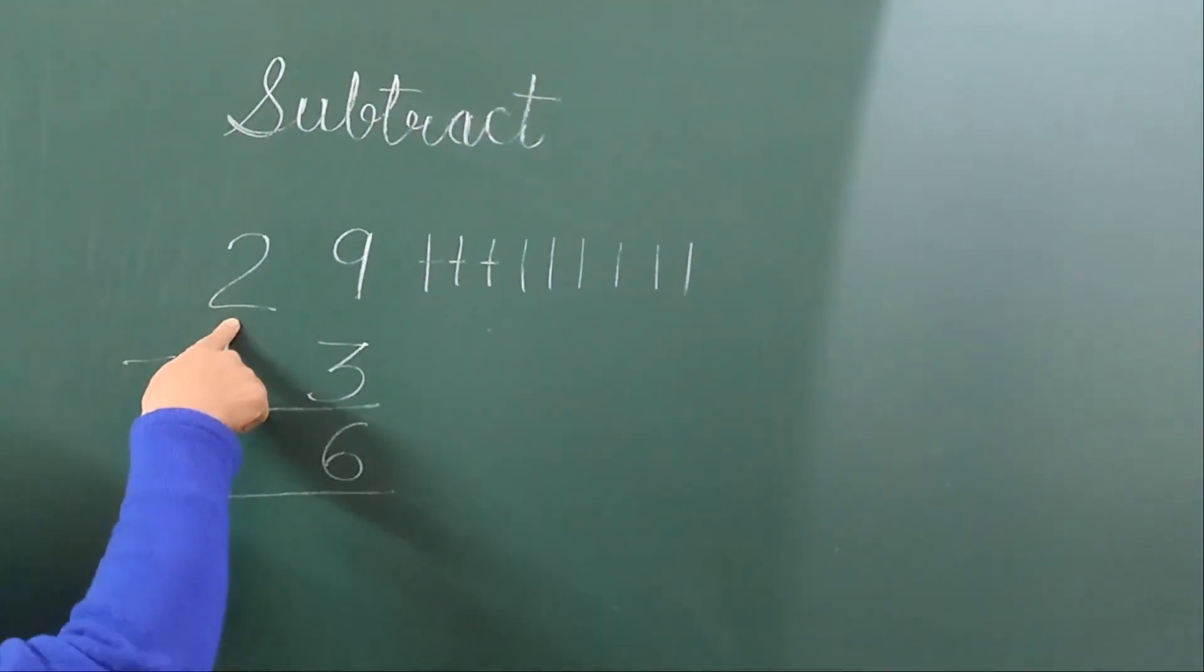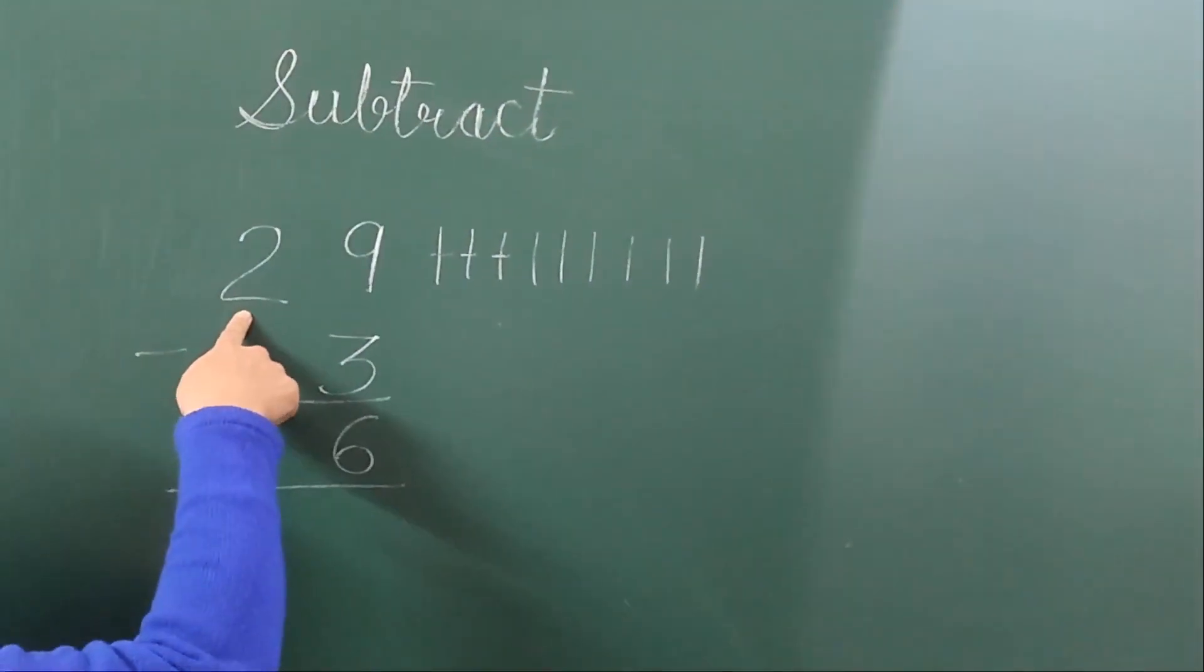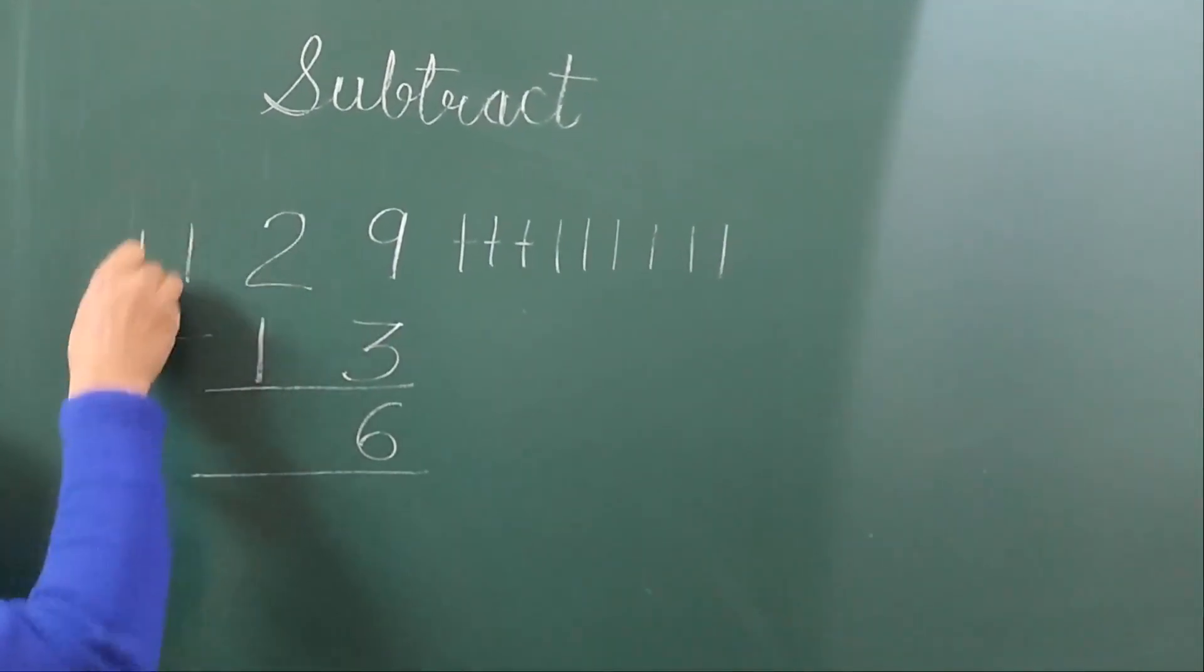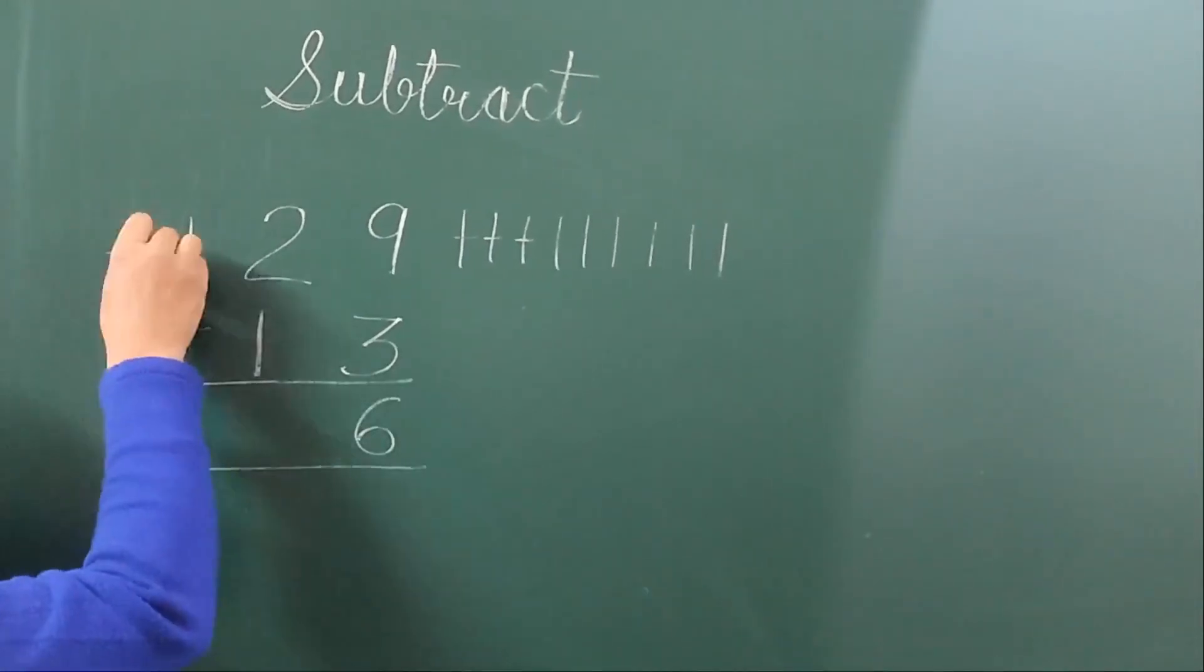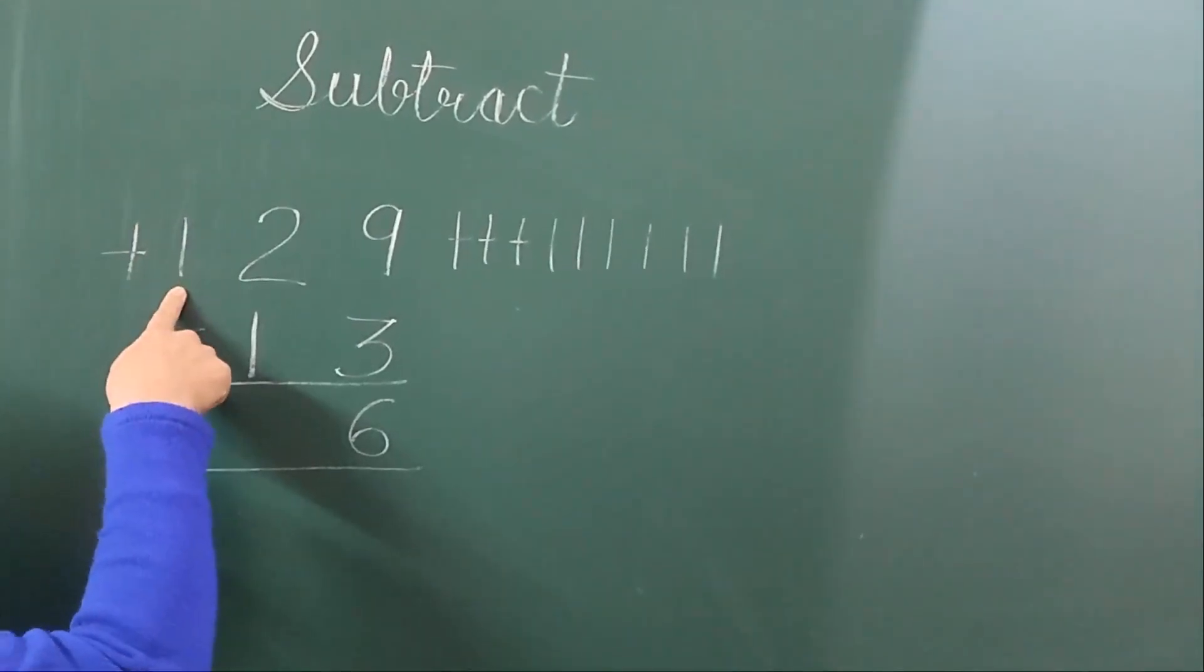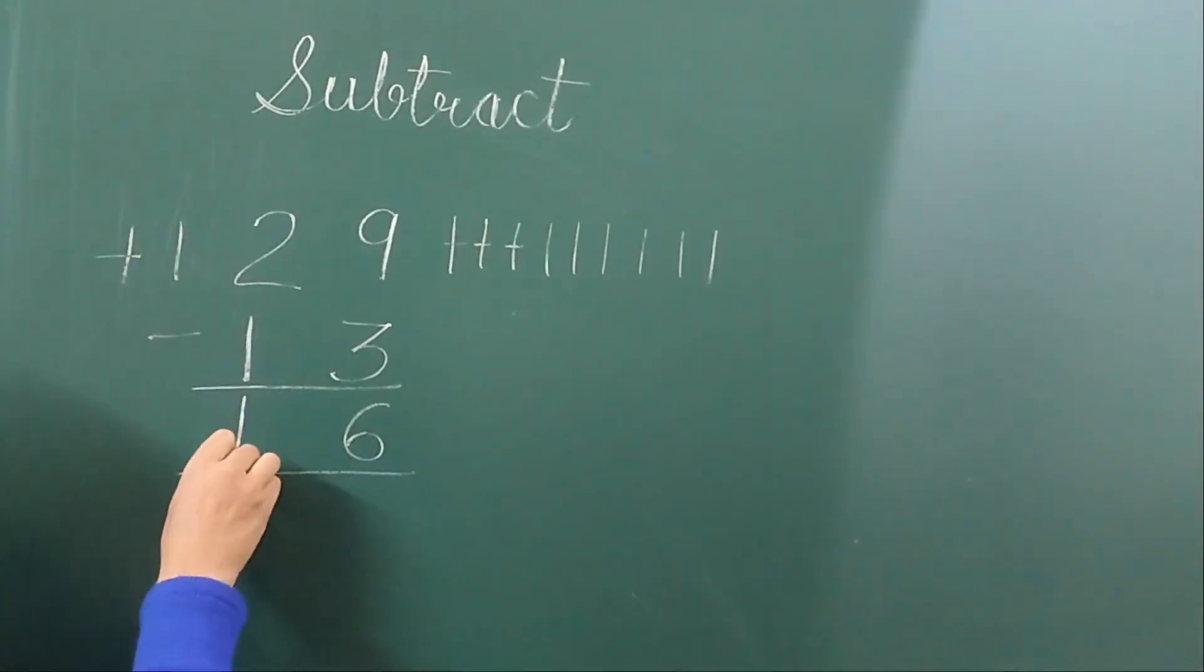Now look at the tens place. 2 is here, so draw 2 lines. Minus 1 - cut 1 line. How many lines are left? 1. So the answer is 16.